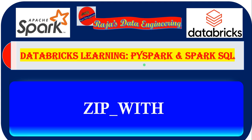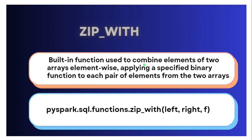So what is zip_with? zip_with is one of the built-in PySpark functions which is used to combine elements of two arrays by performing element-wise operations. We can apply a specific binary function to each pair of elements from those two arrays. A binary function accepts two input parameters and provides one output parameter. In this case, we are going to pass a pair of elements — one element from the first array and another element from the second array — then apply a binary function to combine them into a single element and produce a new array as output.